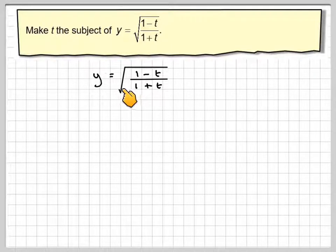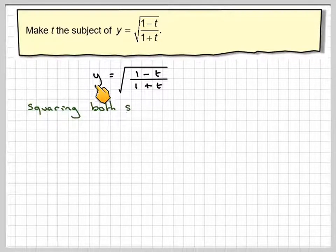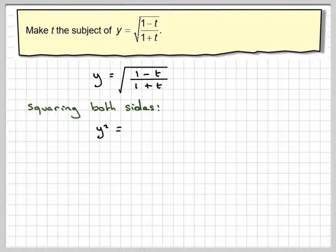Right, so the first step to remove the square root sign is to square both sides. So this will become y squared, and this side will become 1 minus t over 1 plus t.